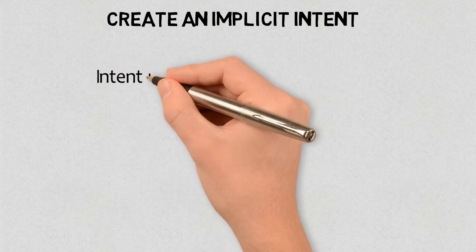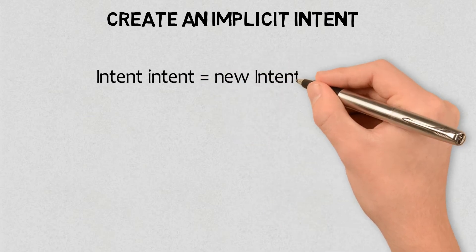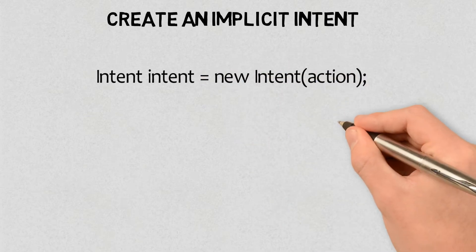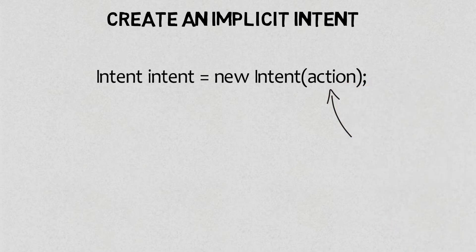Let's create an implicit intent. You create an intent that specifies an action using the following syntax: Intent intent equals new Intent, in the brackets action, where action is the type of activity you want to perform.